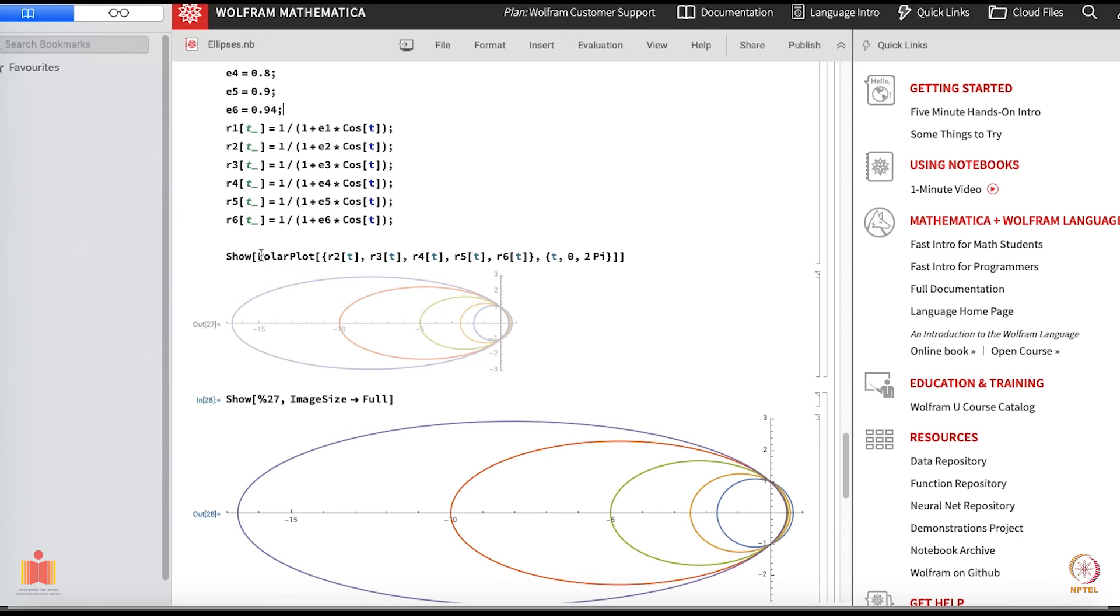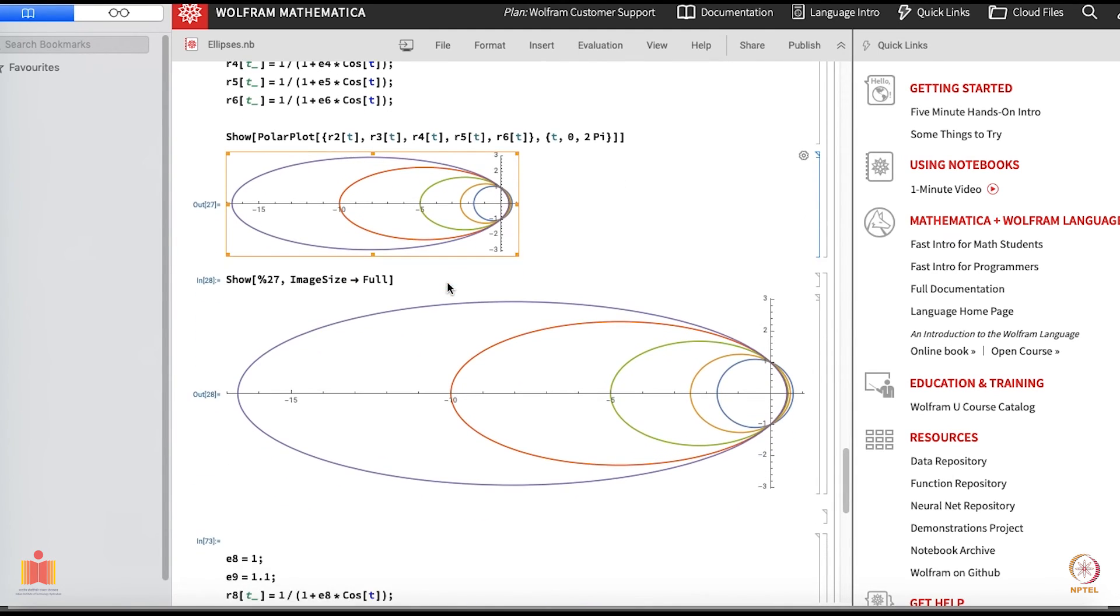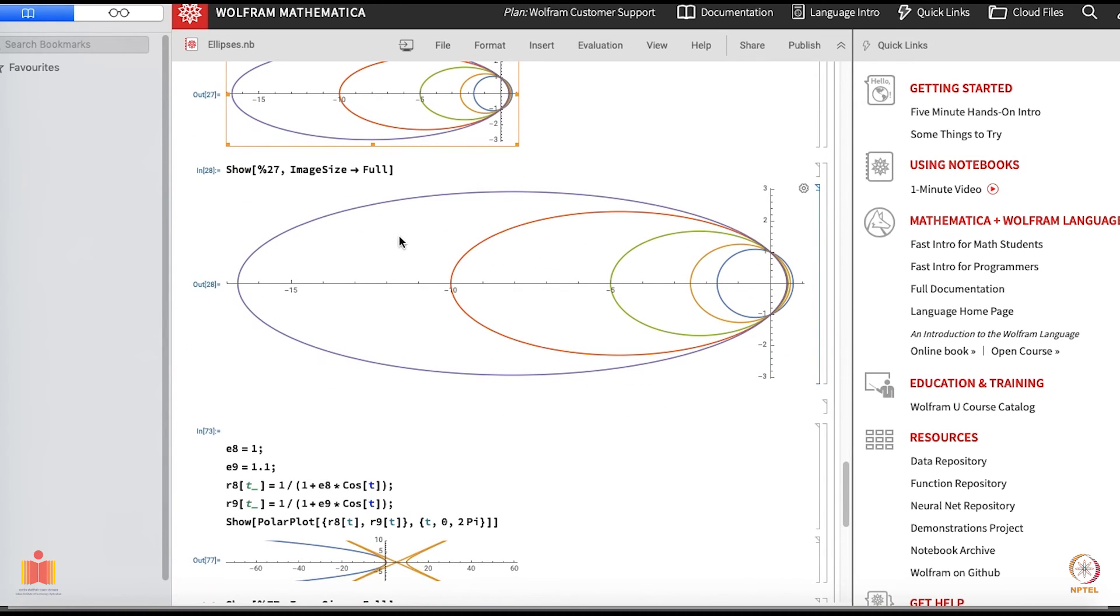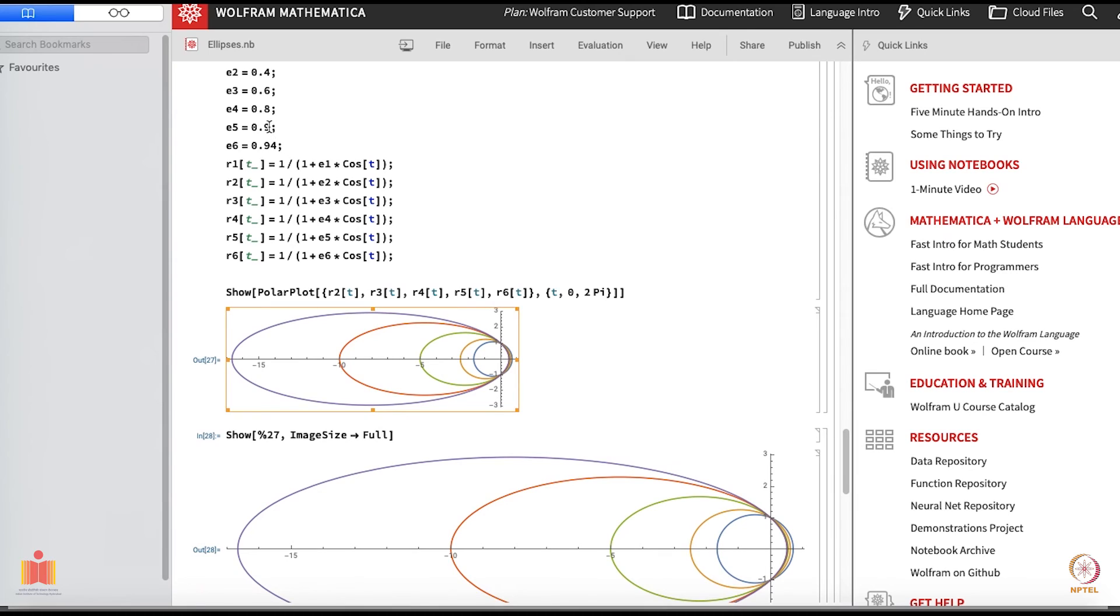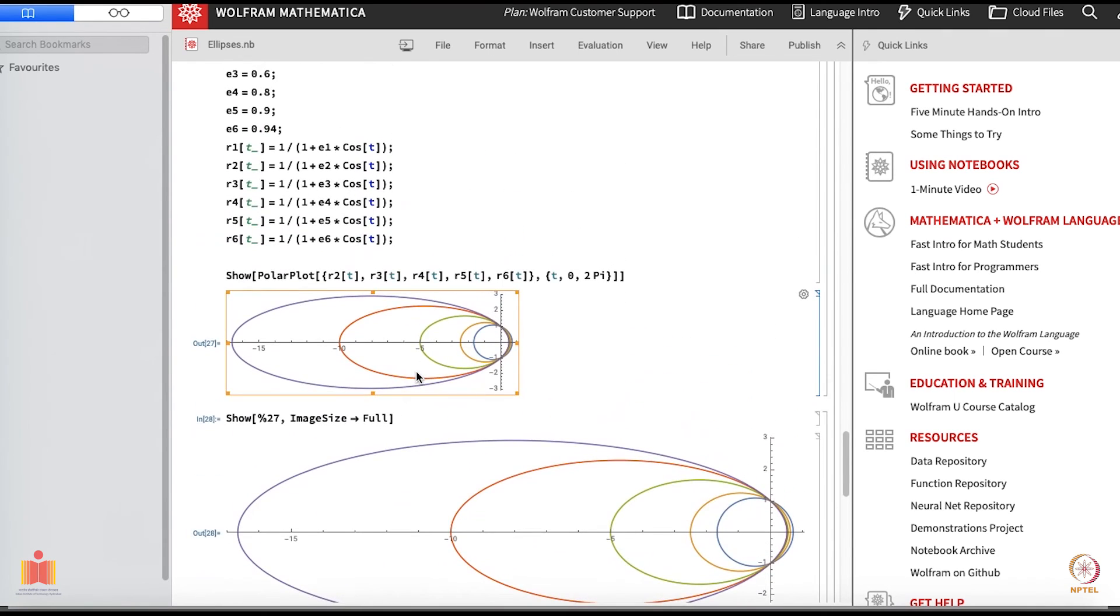Now I am trying to do a polar plot of several of these. I have r2, r3, r4, r6 - they all have to be included within a curly bracket here - and I am plotting from 0 to 2 pi and I should put a show here so that it can show all of them together, and this is what you get. The same image I have zoomed now and this is what you get. You see even when you are very close to 1, your epsilon is 0.9 or 0.94, you are still not getting a highly elliptical thing. This is how this eccentricity grows.